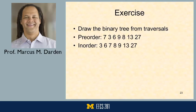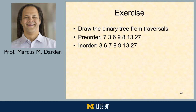Given one tree and two traversals, find the third. There's a unique tree with pre-order: 7, 3, 6, 9, 8, 13, 27, and in-order: 3, 6, 7, 8, 9, 13, 27. From the pre-order traversal, the root is always first — so 7 is the root. Using the in-order traversal, since 3 appears before 7, node 3 must be in 7's left subtree.